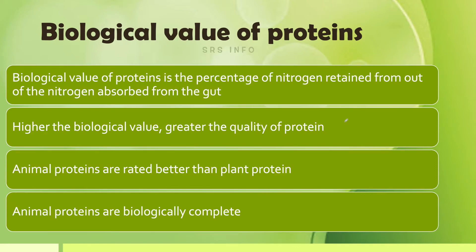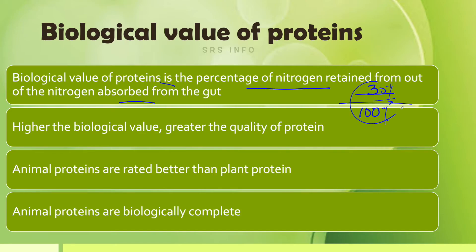Egg has a high biological value of protein — so what does biological value mean? The biological value of protein is the percentage of nitrogen retained out of the nitrogen absorbed from the gut. Simply put, it is the nitrogen used for tissue formation out of the nitrogen absorbed from food.